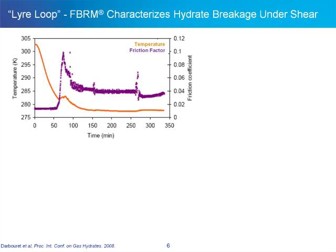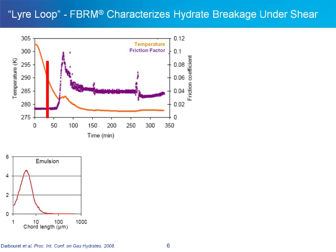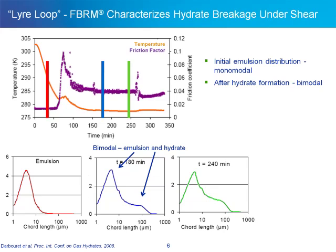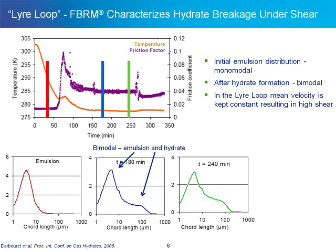For the lyre loop, FBRM was used to characterize the breakage of hydrates under shear. The upper graph shows the temperature and friction factor of the lyre loop as a function of time. Initially, there is an emulsion present as shown by the FBRM chord length distribution in the lower left, which is unimodal with most of the material being under 10 microns in dimension. As the friction factor increases at time 180 minutes, we see that the distribution is now bimodal, indicating that not only do we have the initial emulsion but also the formation of hydrates. This continues on at time 240 minutes. In the case of the lyre loop, a high level of shear is generated to keep the constant velocity of the system. This shear results in the breakage of hydrates, which we are able to track very effectively with the FBRM, as illustrated by the difference between the two distributions measured at 240 and 320 minutes, where we see a clear reduction in the amount of material above 100 microns in dimension.